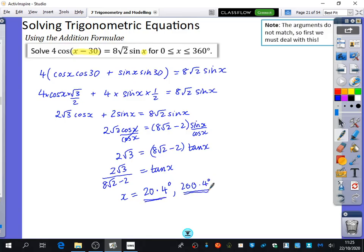So we're only going to have those two solutions that we've got there, because it's tan. If I added on another 180, it goes outside the range.